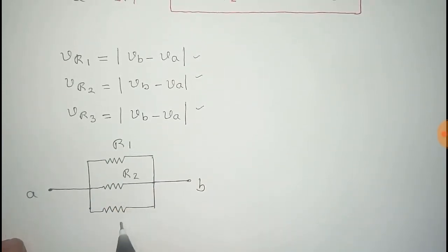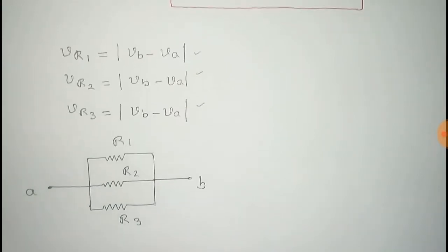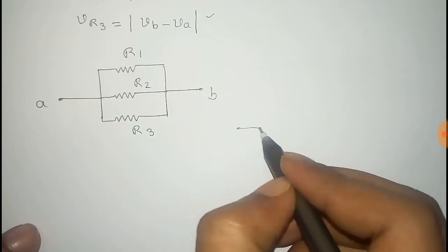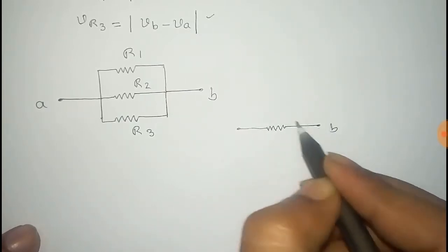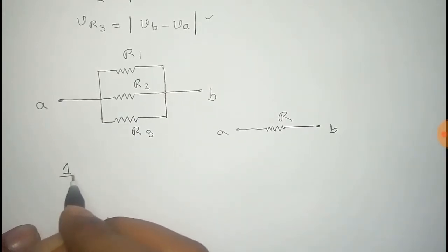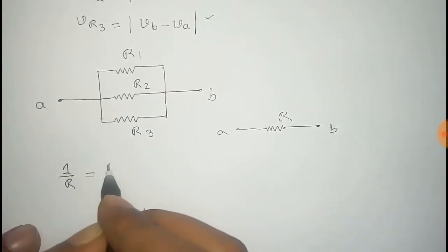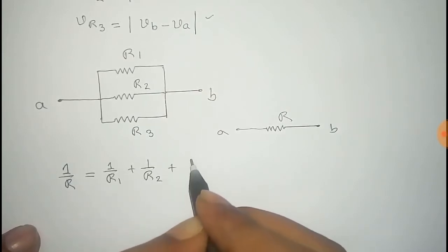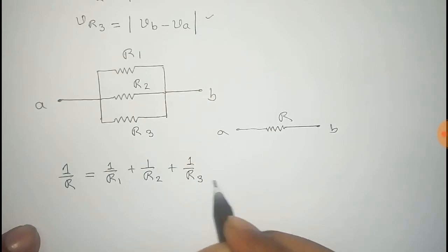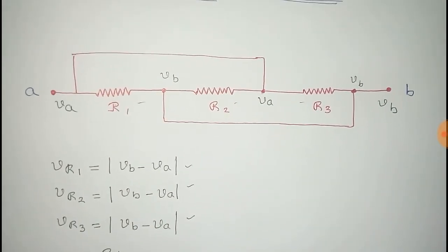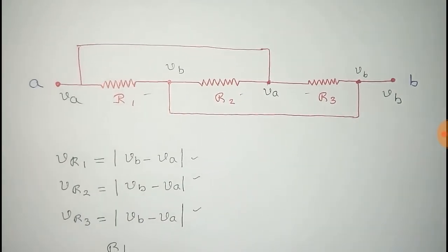You can easily find the equivalent resistance of this three-resistor parallel connection. If we find the equivalent resistance R, the relation is: 1/R = 1/R1 + 1/R2 + 1/R3. Knowing the values of R1, R2, and R3, you can calculate R, the equivalent resistance of this circuit.